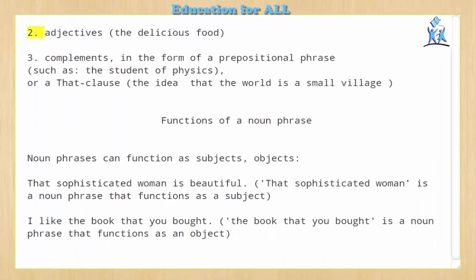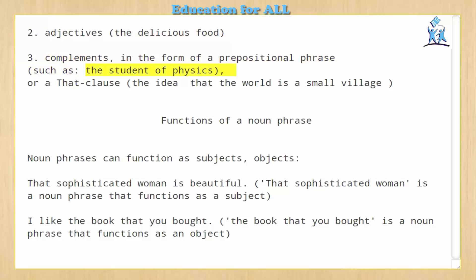2. Adjectives — for example, 'the delicious food'. 3. Complements, in the form of a prepositional phrase, such as 'the student of physics', or a that-clause, such as 'the idea that the world is a small village'.